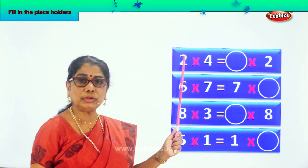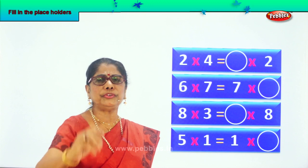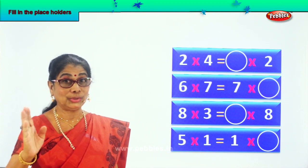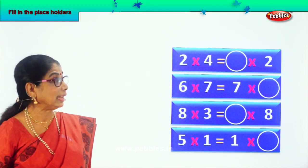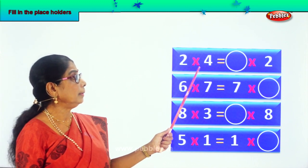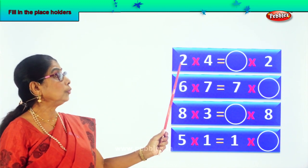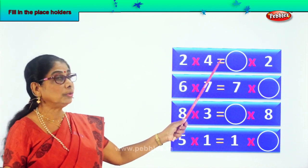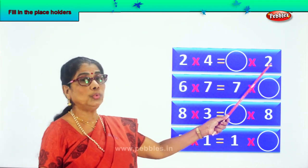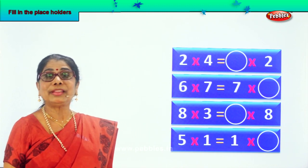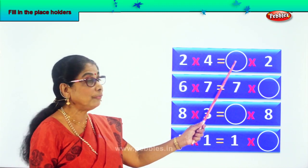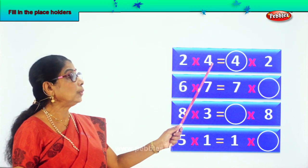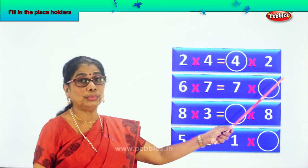Now look at this sum. 2 into 4. What is 2 into 4? 2 into 4 is 8. Now, equal to 2 into 4 is 8. What into 2 will give you 8? Again it has to be 4 only. So 2 into 4 is equal to 8. That is 4 into 2.